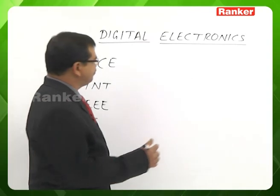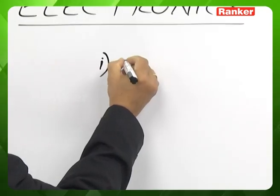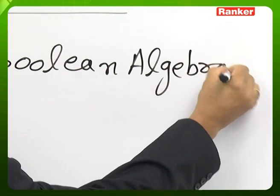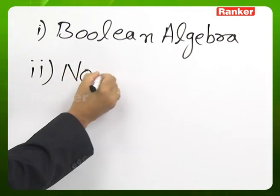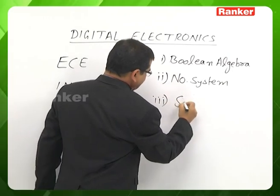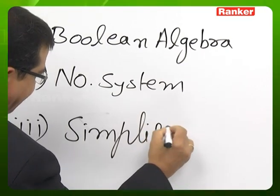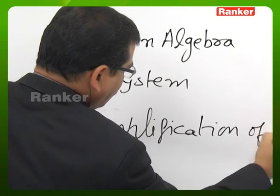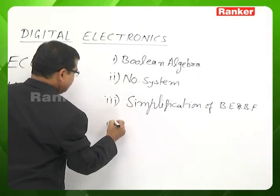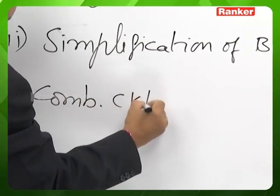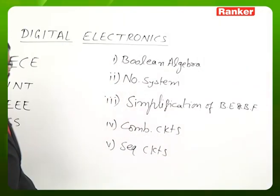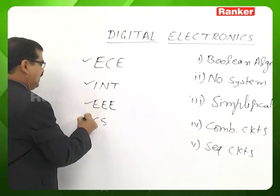The main topics of this subject are Boolean Algebra, Number System, Simplification of Boolean expressions and Boolean functions, Combinational Circuits, and Sequential Circuits. These topics are common for ECE, Instrumentation, EEE, and Computer Science branches.